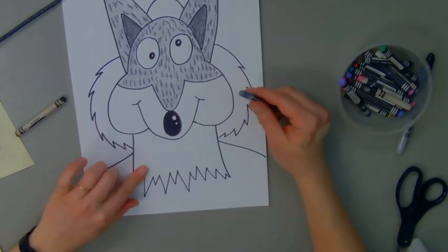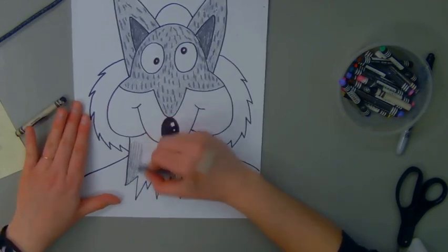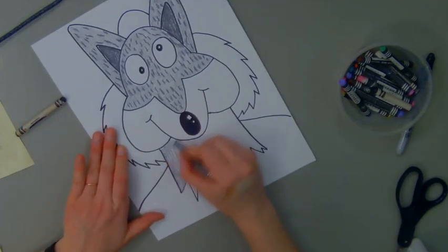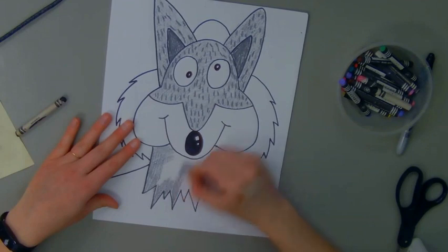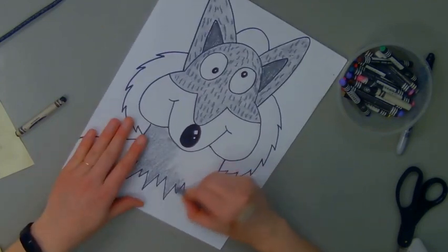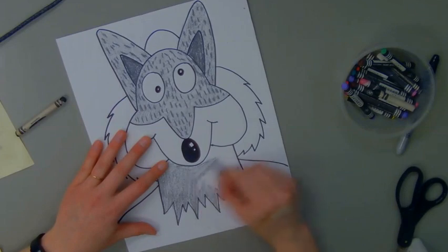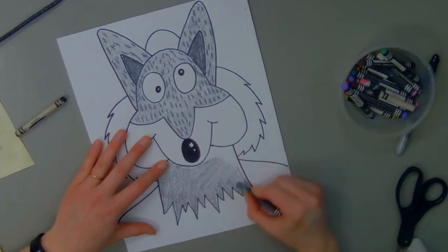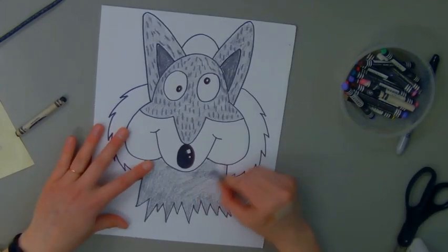Now his neck is going to be the same gray. So I'm going to fill his neck in with that light gray first, and then go over it with my dark gray texture lines. I'm working really hard to try to keep my crayon inside my zigzag lines. Once I fill in this area, I'll go over it with those dark texture lines.